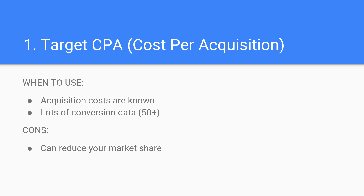Target bidding can be complicated if you don't know what your acquisition costs are or what they should be. Your cost per acquisition is simply the amount of money you can afford to spend on acquiring one new customer. For example, if you sell a product for $50, you don't want to set your CPA at $50 — that would be breaking even when the goal is to profit. When selecting this bidding method, you can enter your target CPA and then you're good to go.